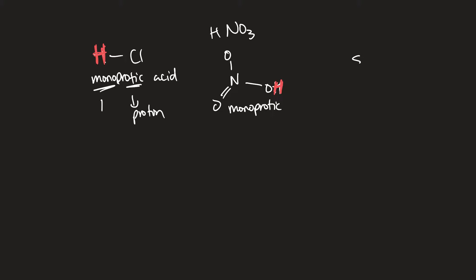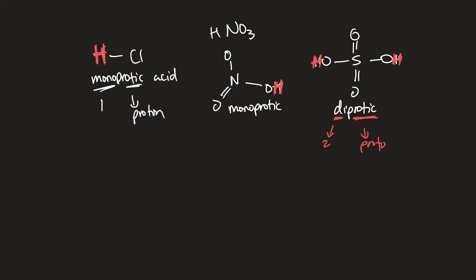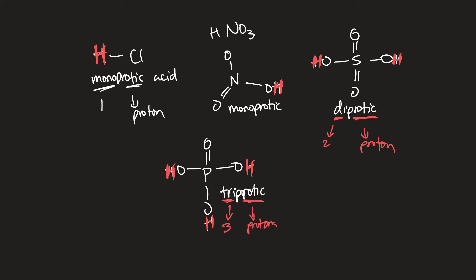Sulfuric acid has the ability to donate two H's in its Lewis structure, which makes it a diprotic acid — 'di' meaning two protons. Phosphoric acid consists of three hydrogens in its Lewis structure, making it a triprotic acid — 'tri' meaning three protons or three hydrogen ions it can donate.